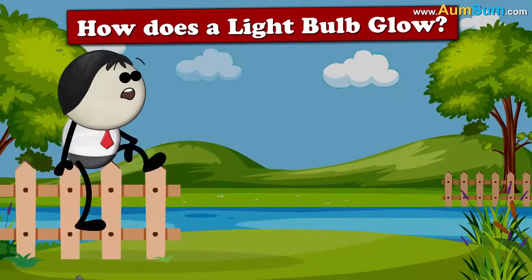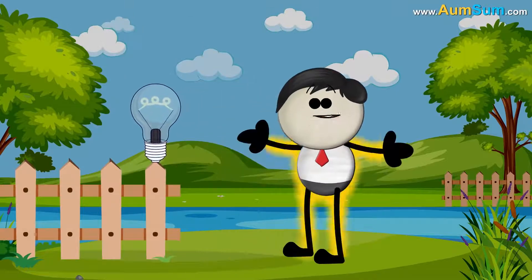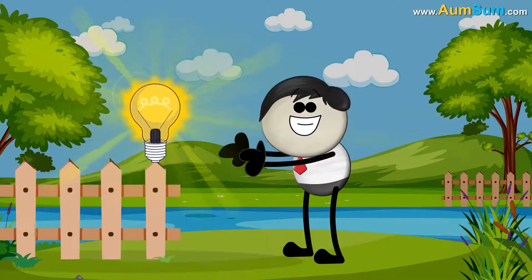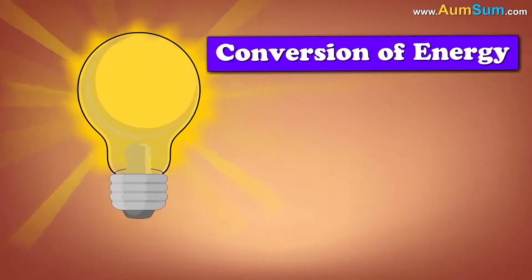How does a lightbulb glow? Simple. It glows because of AumSum's brightness. Oh AumSum. A lightbulb glows because of the principle of conversion of energy.